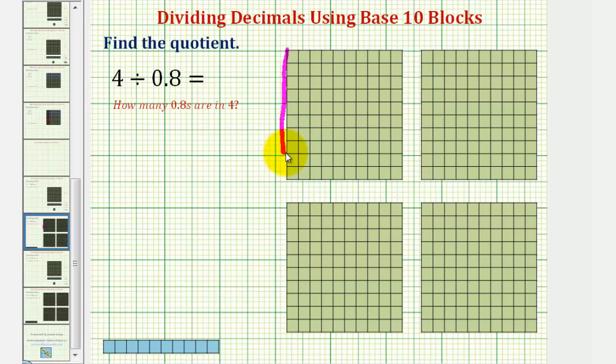Here's one copy of eight longs, or one copy of eight-tenths. And then we have two, three, four, five, six, seven, eight longs here, for a second copy of eight-tenths.